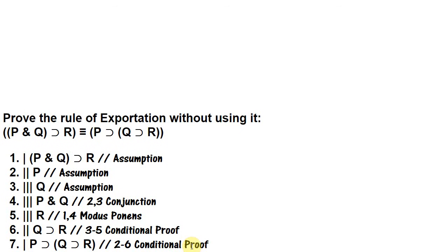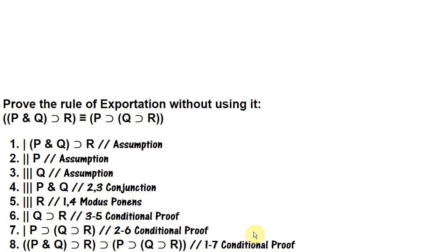And now we can close off the assumption, the second assumption, and we get if p, then if q, then r from lines two through six conditional proof. And then we can close off our outermost assumption, and we can get if p and q, then r, then if p, then if q, then r.